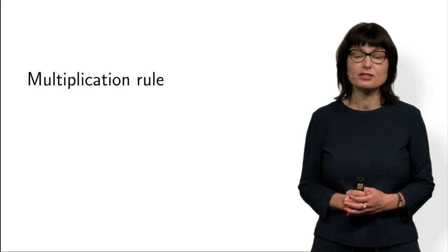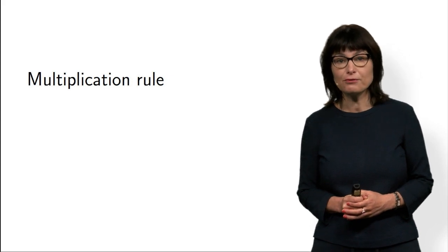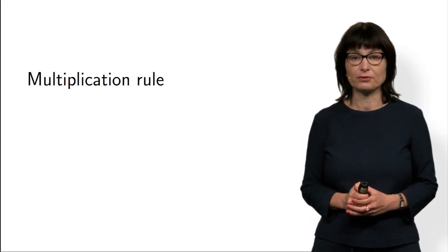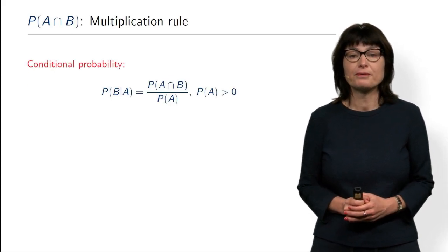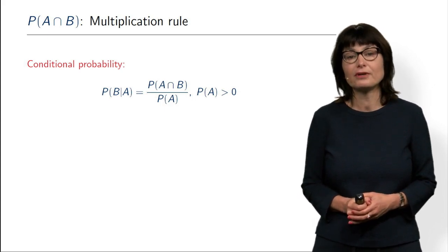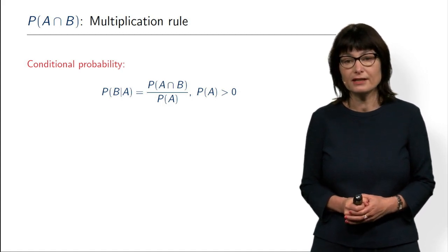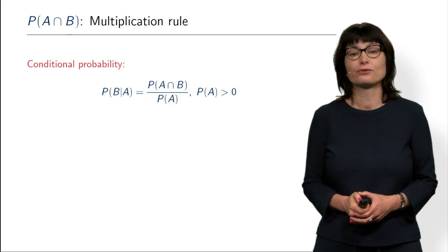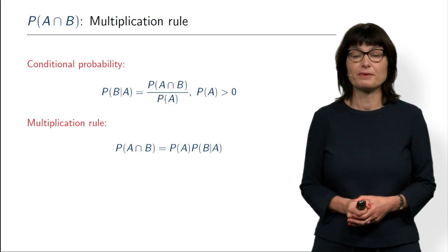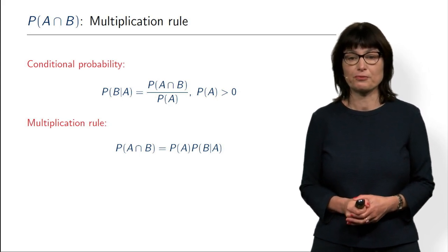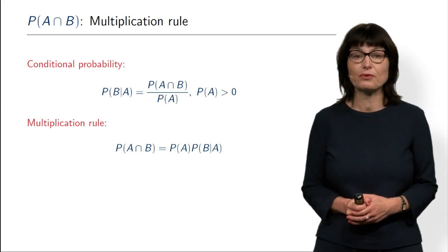With this definition of conditional probability, we can immediately derive a very important formula. It is very simple but plays an important role in probability theory: the multiplication rule. The multiplication rule allows us to compute the probability of intersection. If you look at this formula, you can write down P(A ∩ B) by multiplying both sides by P(A). What you get is that the probability of intersection is the probability of A times the probability of B given A.